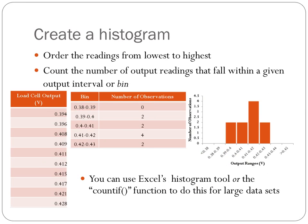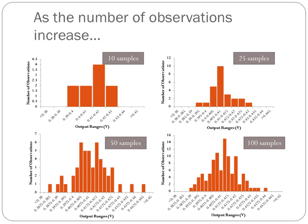Now we're going to look at what happens when we make more than 10 measurements. As we increase the number of observations from 10 to 25 to 50 to 100, we can see that since we have a larger number of samples, we have better resolution, and we can define our bin sizes to be much smaller. You'll also notice that we have the same characteristic: the largest number of observations fall near the mean that we calculated previously.